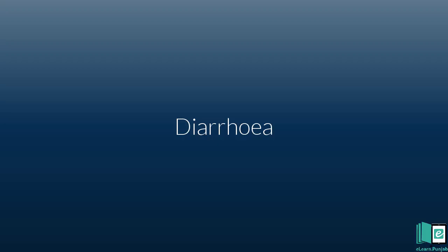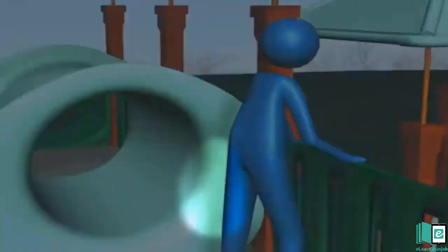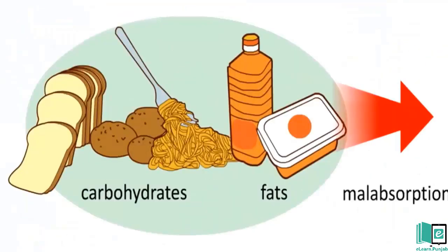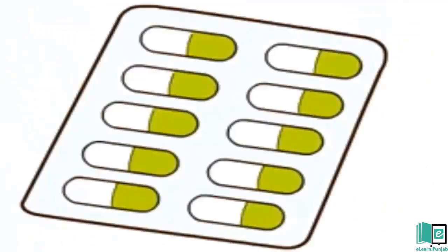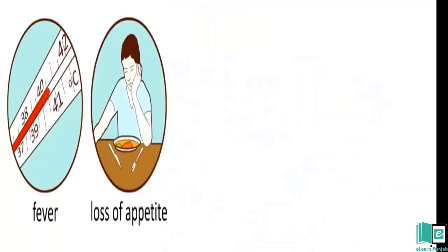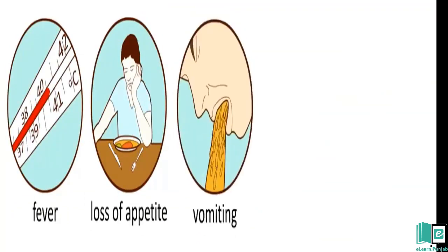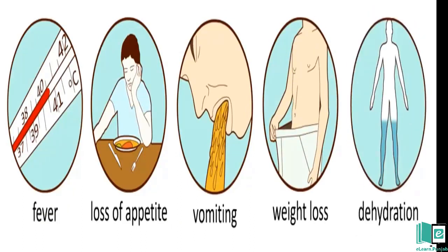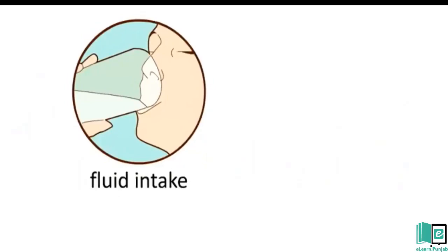Diarrhea. Diarrhea is passing semi-liquid feces. It may be caused by an infection, eating contaminated food, a reaction to some medicine, or just anxiety or excitement. Some of the most common symptoms of diarrhea are abdominal pain, cramping, bloating, nausea, loose motions, fever, and bloody stools. Diarrhea can be fatal in case of severe dehydration.